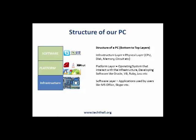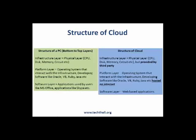So the computer we are using consists of three layers: one, hardware which is the infrastructure; two, OS and basic software like JDK, .NET, which is the platform; and three, application software on top like MS Office, internet browser, Skype, etc. Cloud service models can be related to these three layers of a computer.